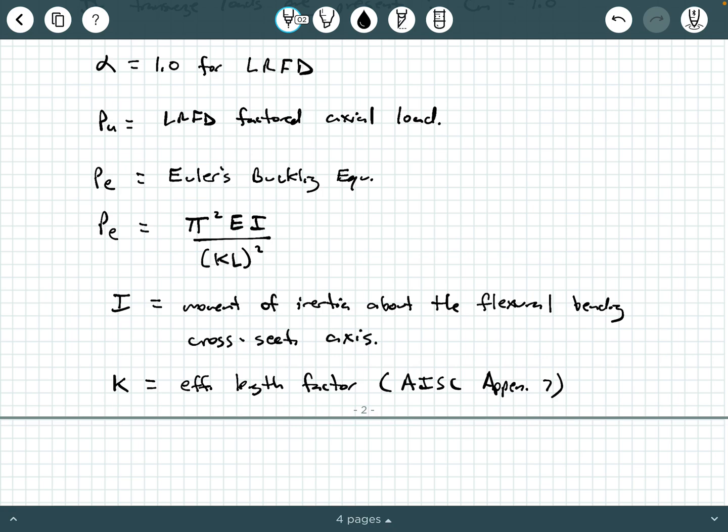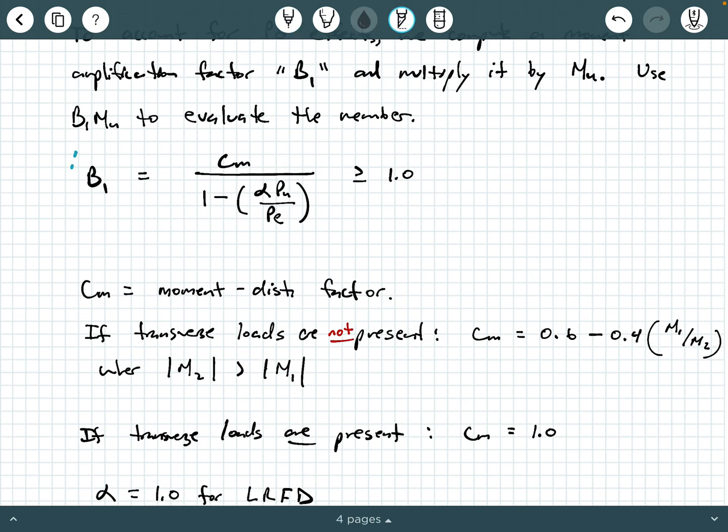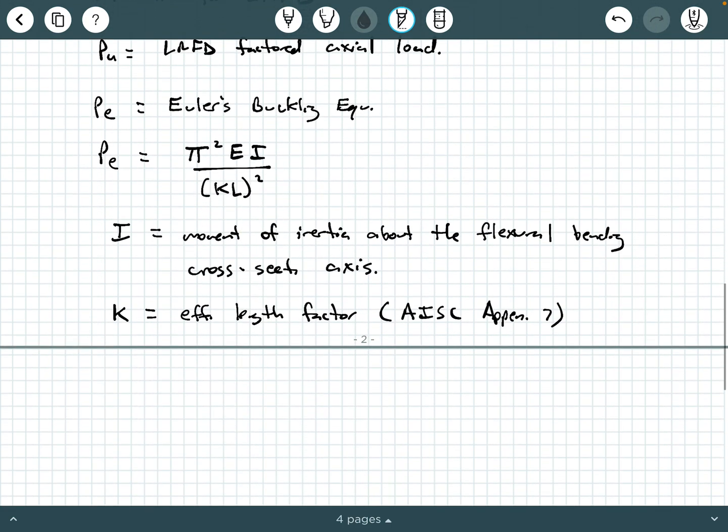And that is pretty much it. So this is it in a nutshell. So again, all of this is to calculate this moment amplification factor that we would then apply to MU, and basically magnify or ramp up our MU moment value when we are checking or evaluating or designing a beam column member. So that is going to conclude this video. Thanks for watching.